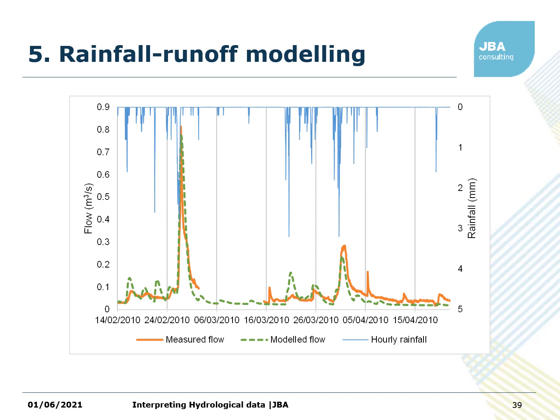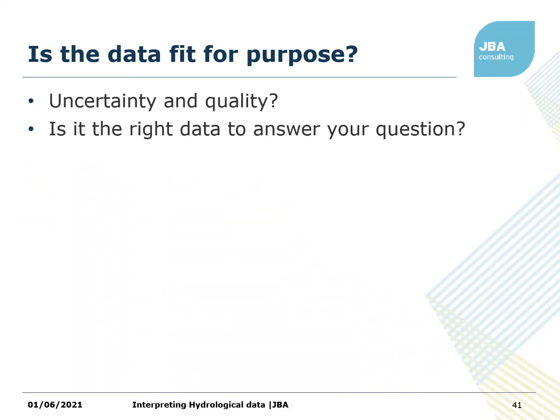The final technique in this section is rainfall-runoff modelling. A rainfall-runoff model is one where you input rainfall and evapotranspiration, calibrate the model so it represents observed flows over a period where you do have data, and then run the model for a period where you have rainfall data but not flow data, to use for some sort of analysis. This kind of modelling is currently used for water quality assessments for catchments with only short temporary gauge records, where the water quality assessment requires looking at frequency of meeting standards over a 10-year period.